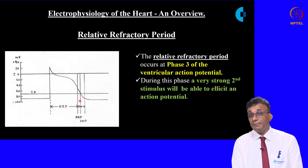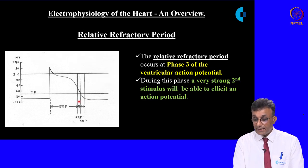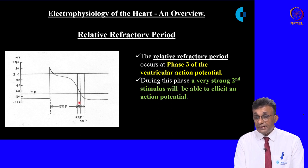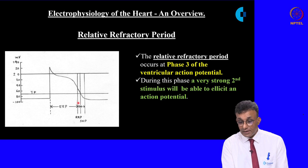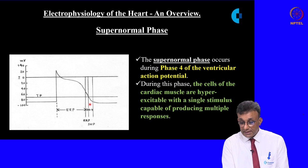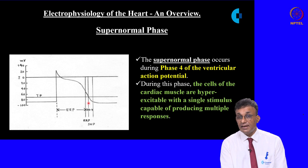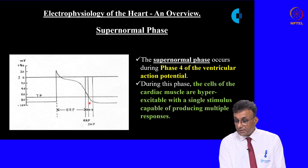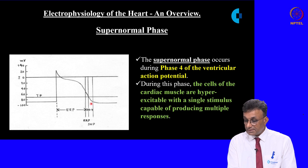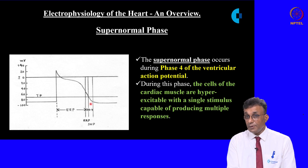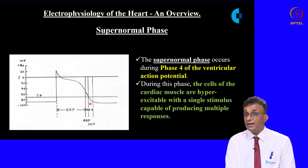The relative refractory period follows the absolute refractory period, during which a very strong stimulus can bring about a second action potential. The last portion, the supernormal phase, is present in phase 4 of the action potential. It is this supernormal phase from which most arrhythmias are generated — during it, cardiac muscle cells are hyper-excitable, with a single stimulus capable of producing multiple responses.